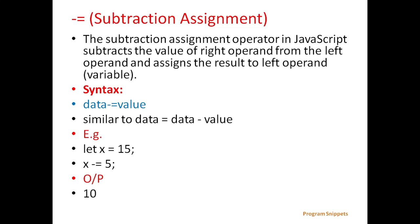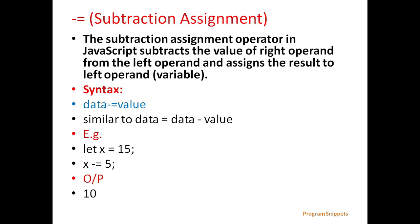Next is subtraction assignment. The subtraction assignment operator subtracts the value of the right operand from the left operand and assigns the result to the left operand. General syntax is: data -= value, which is similar to data = data - value. For example, let x = 15, then x -= 5, which will give the output 10. Here 5 is subtracted from 15 and the output is 10.